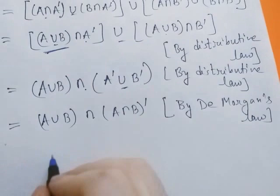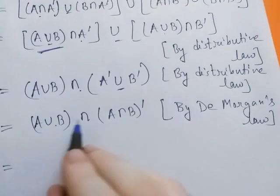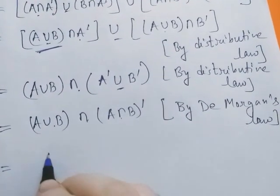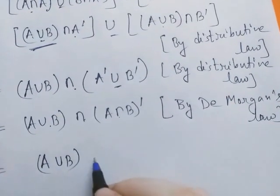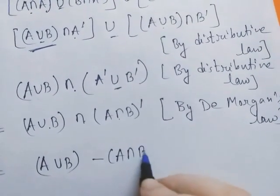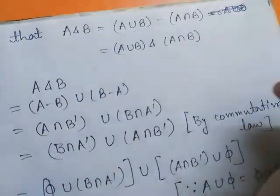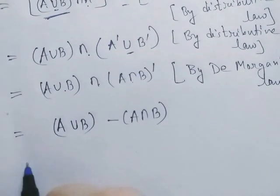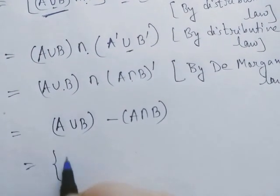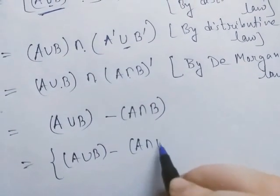Now this equals simply (A ∪ B) ∩ (A ∩ B)', which can be written as (A ∪ B) − (A ∩ B). So we have proved A Δ B = (A ∪ B) − (A ∩ B). To prove the second equality, we write (A ∪ B) − (A ∩ B) as (A ∪ B) minus (A ∩ B).